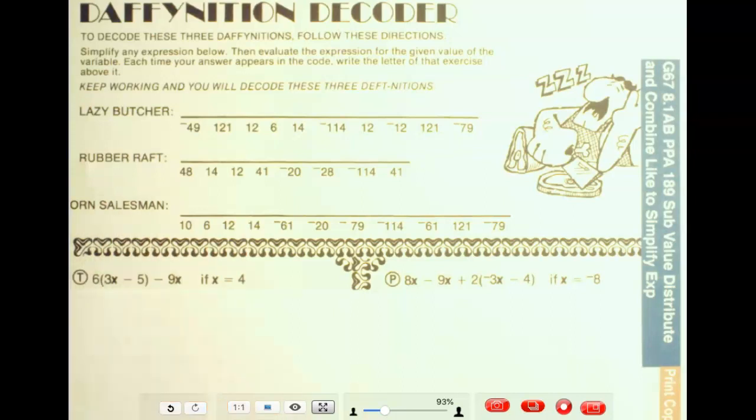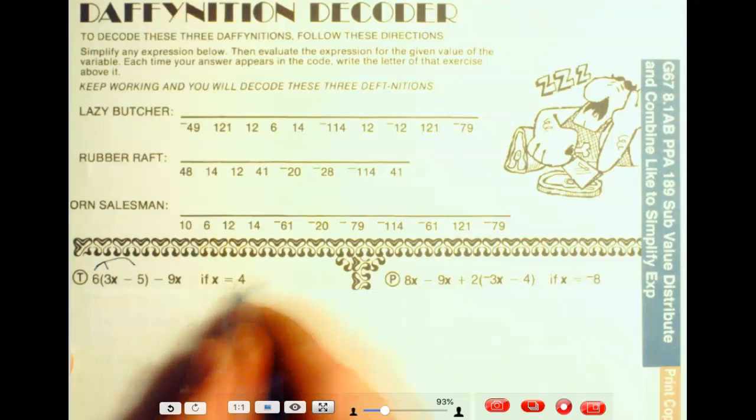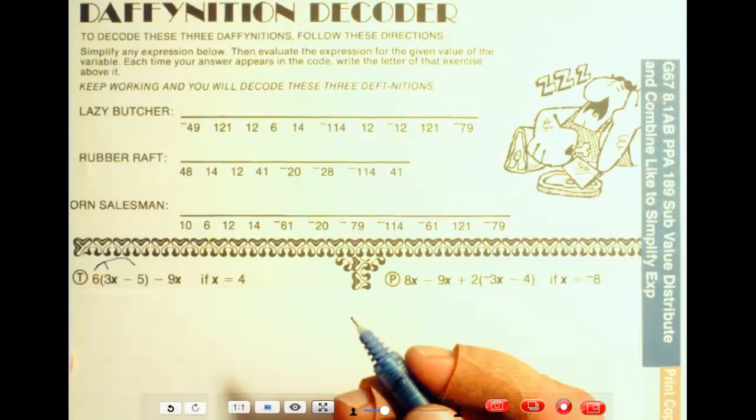So let me just get going here. We're using pen. So we're just going to distribute these out, see what we've got, we'll have to combine them. And they're telling us that x is equal to 4. So you can do this a couple different ways.